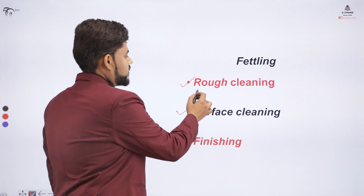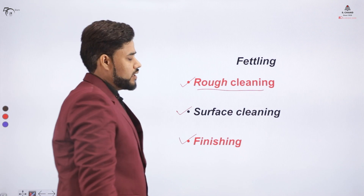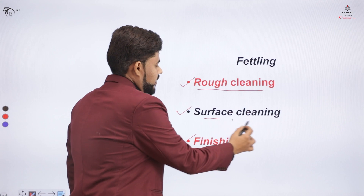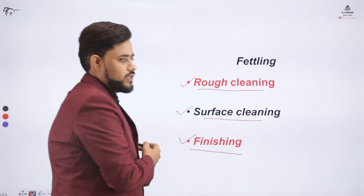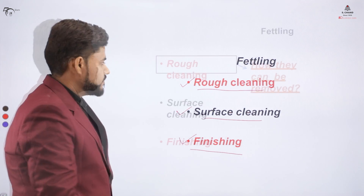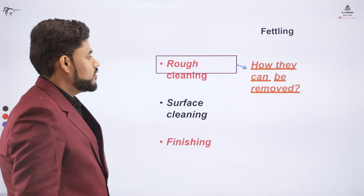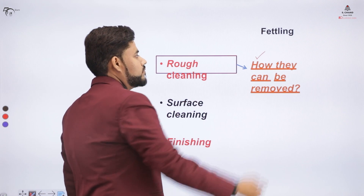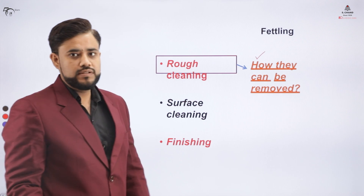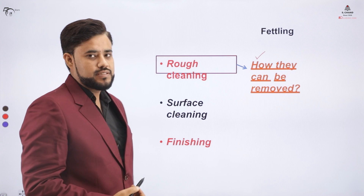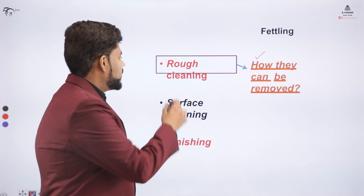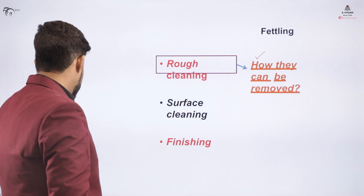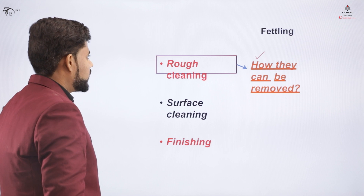Number one is the rough cleaning operation. Number two is the surface cleaning operation, and number three is the finishing operation. In the rough cleaning operation, we remove extra material from the surface of the casted item.